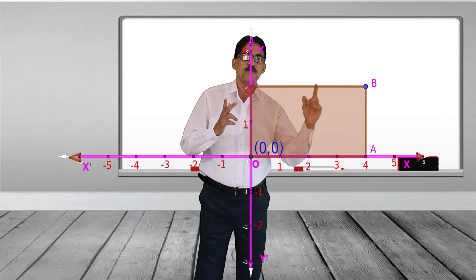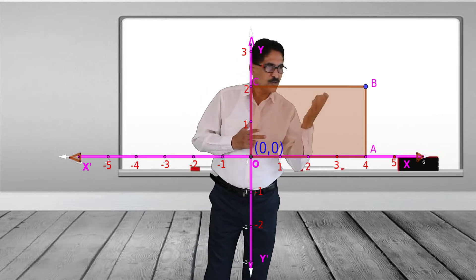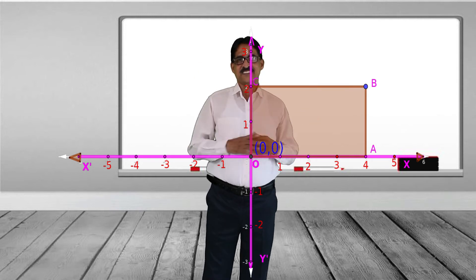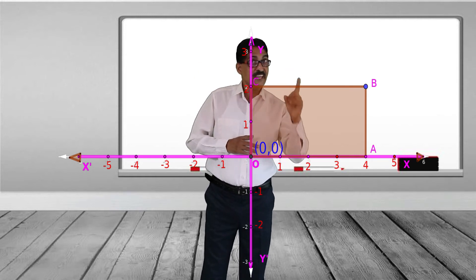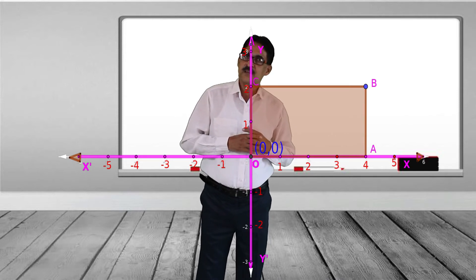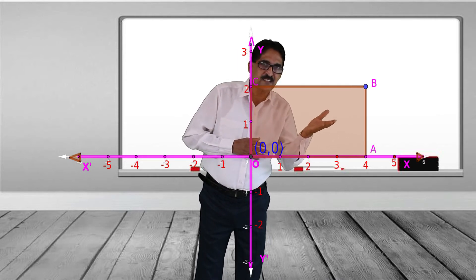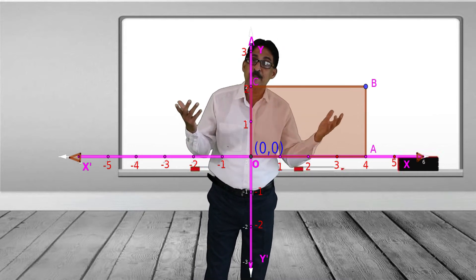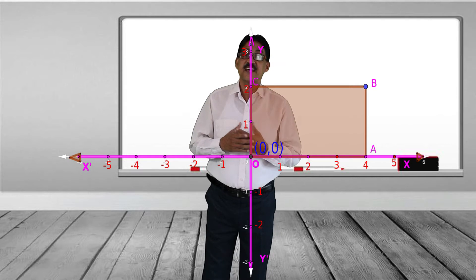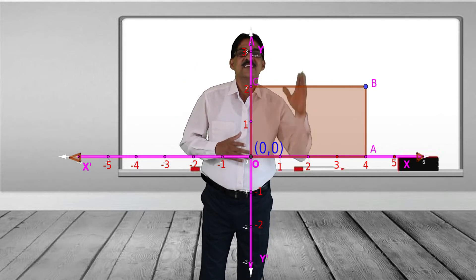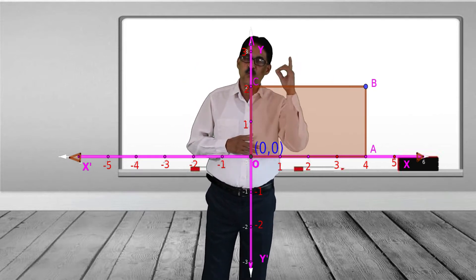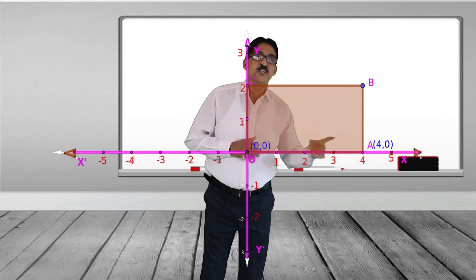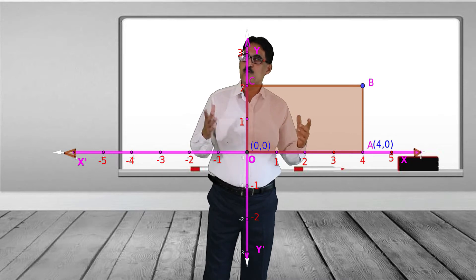Now find the coordinate of A. The point A is on the x-axis, and its x-coordinate is 4. We cannot draw a perpendicular to the y-axis, so its y-coordinate is 0. Therefore the coordinate of A is (4, 0).